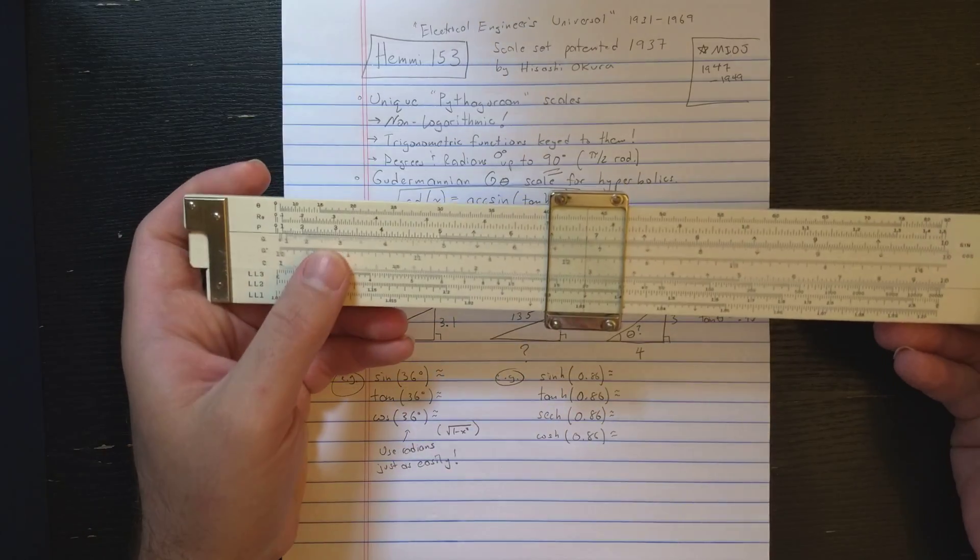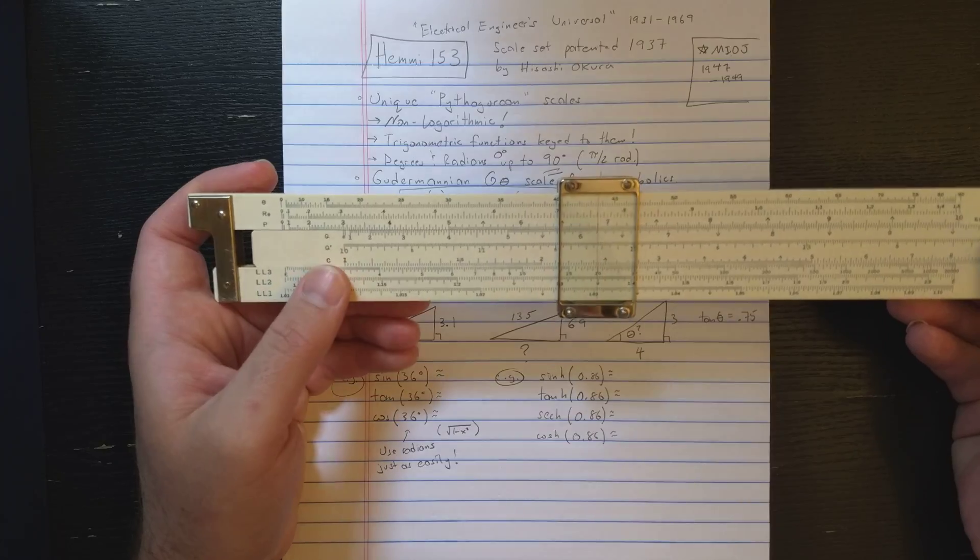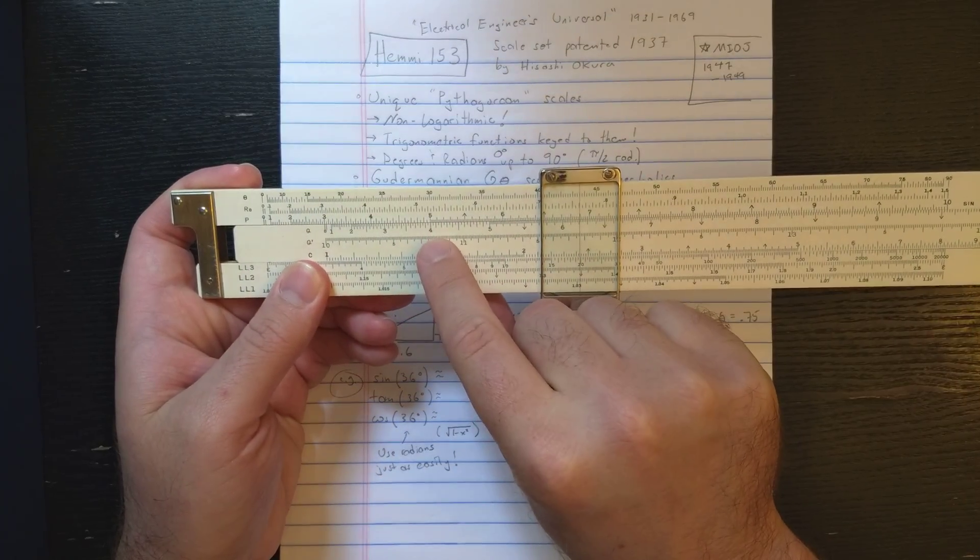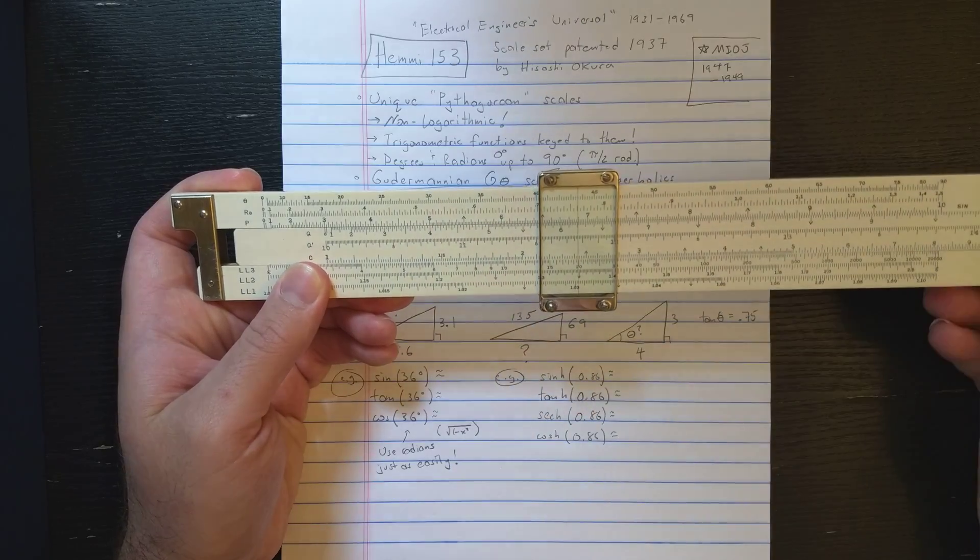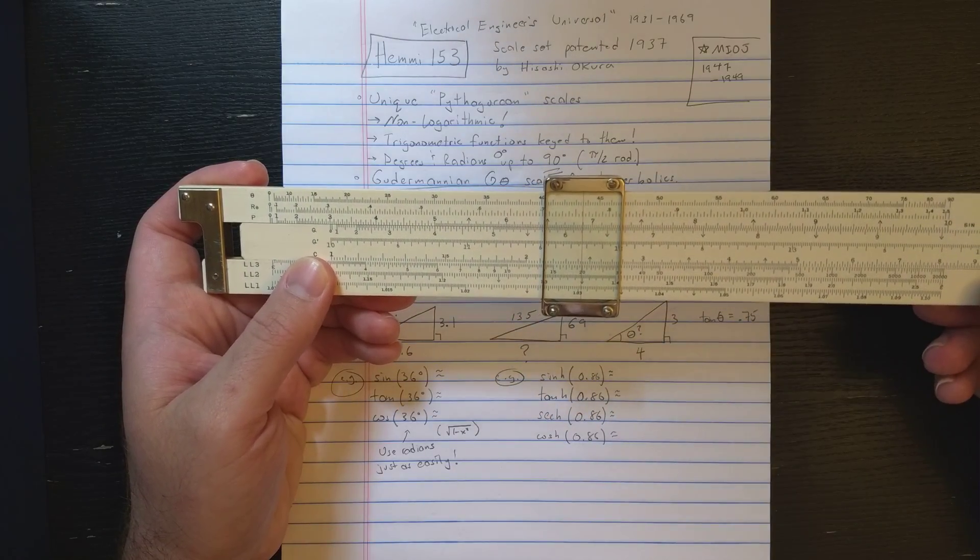So, for example, if I find the 3 there on P, I set under it the 0, I come out to the 4 on Q, then I read 5 on P. So it's kind of like it computes 3 squared plus 4 squared equals 5 squared when you do that.